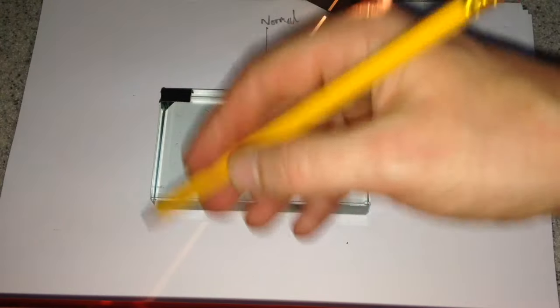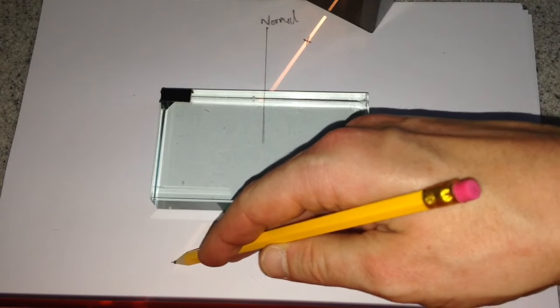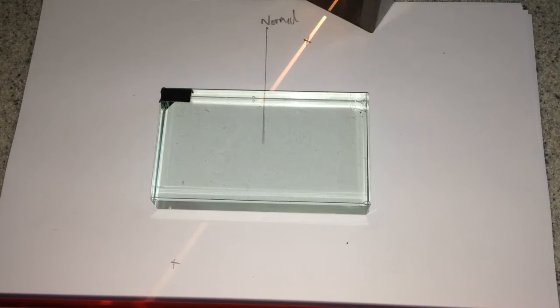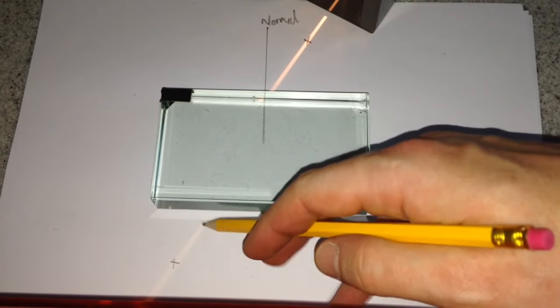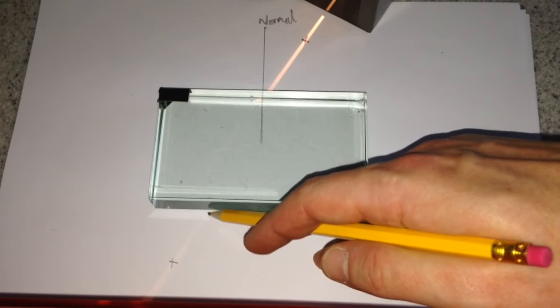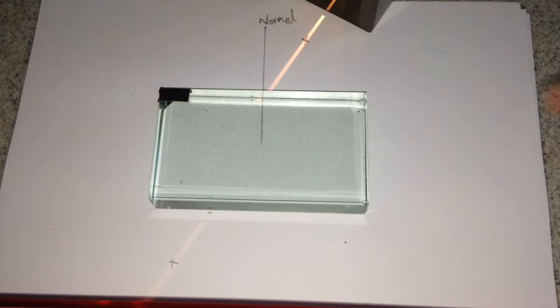So what we do is we mark, again we plot where the ray of light is going. And we very carefully mark a point, the point where the ray of light comes out of the glass block.